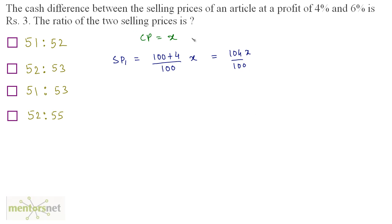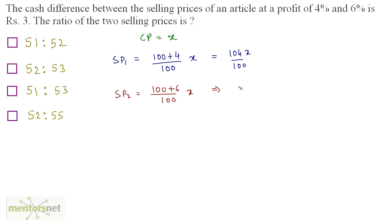Now we have another selling price which is a 6% increase in the cost price. Let us term this SP2. SP2 is equal to (100 + 6) / 100 × X, which is 106X / 100.